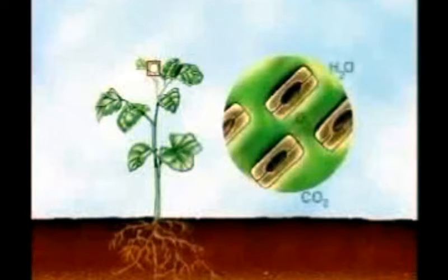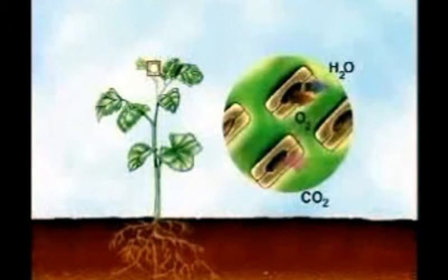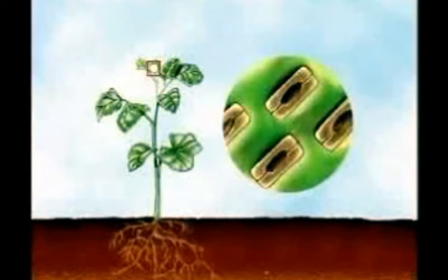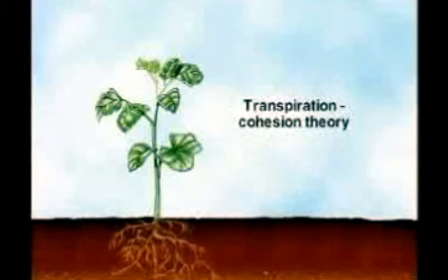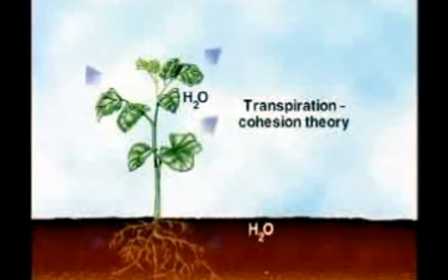It must open them to take in carbon dioxide for photosynthesis and to expel waste oxygen. Consequently, the plant must continually balance the movement of carbon dioxide into the leaf with the loss of water out of the leaf. According to the transpiration cohesion theory,